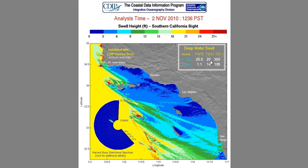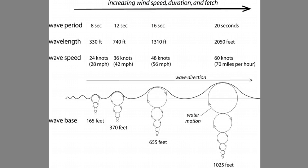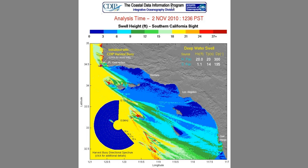A 20-second period swell with 20 feet in deep water is a really substantial wave. Remember from the last video: the more energy the storm puts into the ocean, the longer the period. A 20-second period comes from a really big storm — you don't get periods much longer than that anywhere, even in the Pacific Ocean. So these are big swells coming into our coastline, coming from a compass direction of 300.